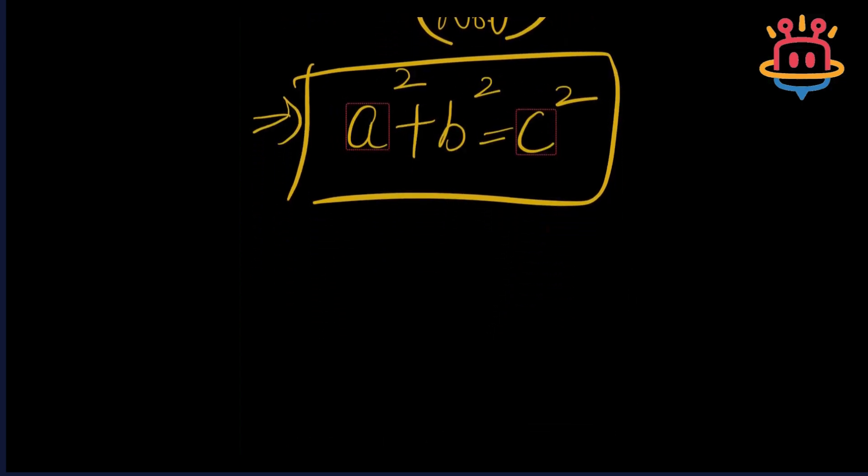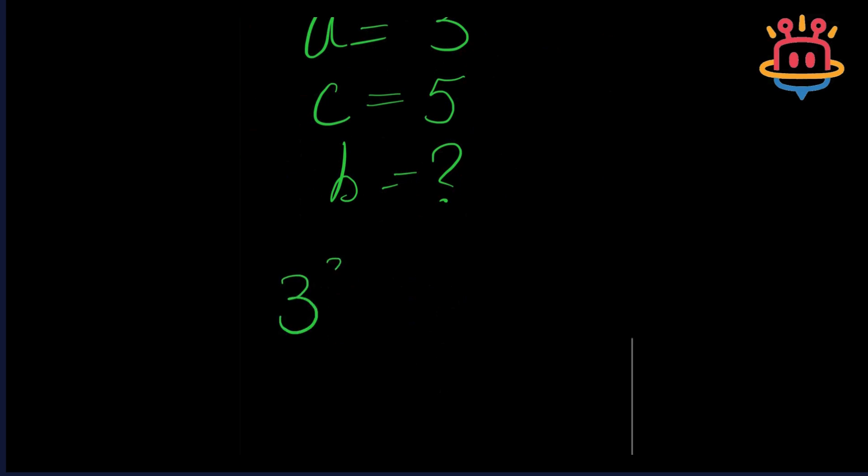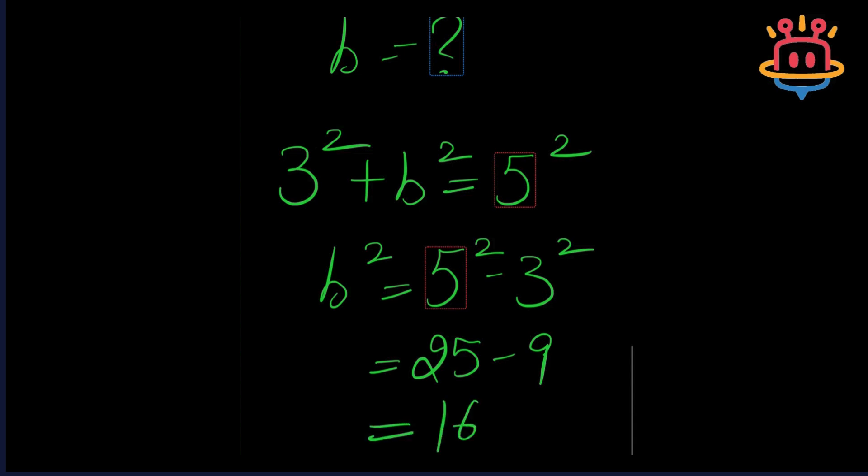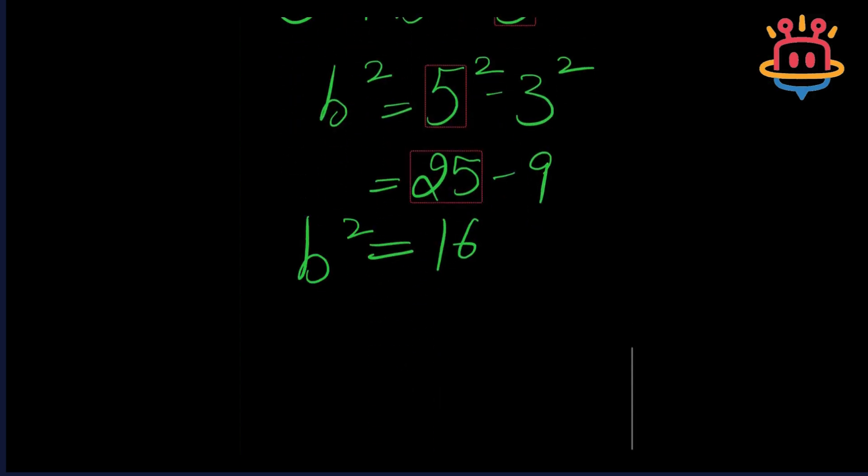When we substitute our values here as a = 3, c = 5, and we have to calculate the value of b. So 3² + b² = 5². Now b² = 5² - 3². This is 25 - 9 and this is 16.